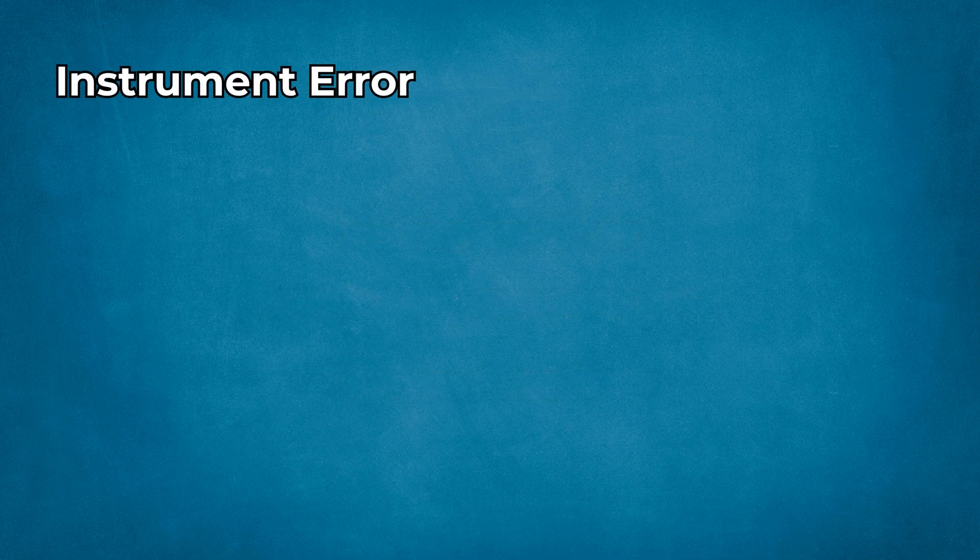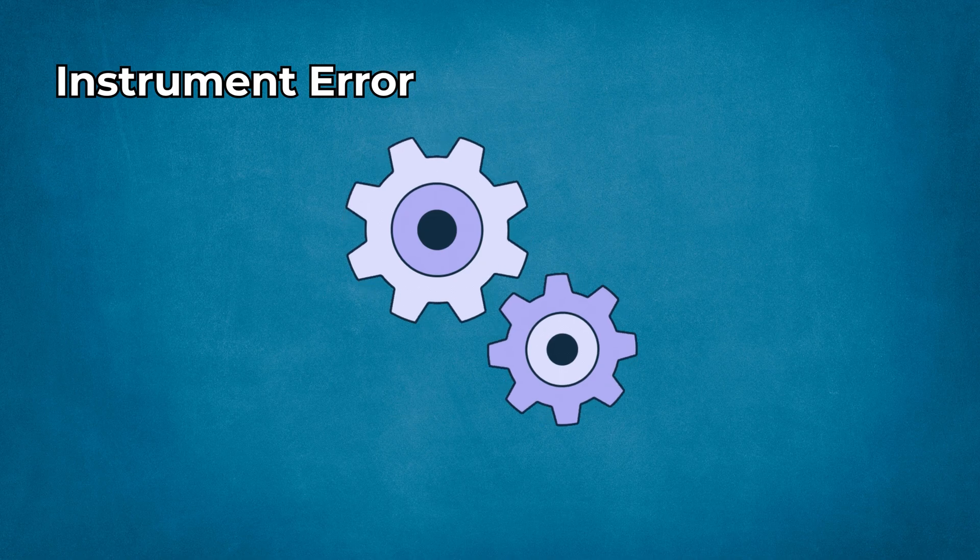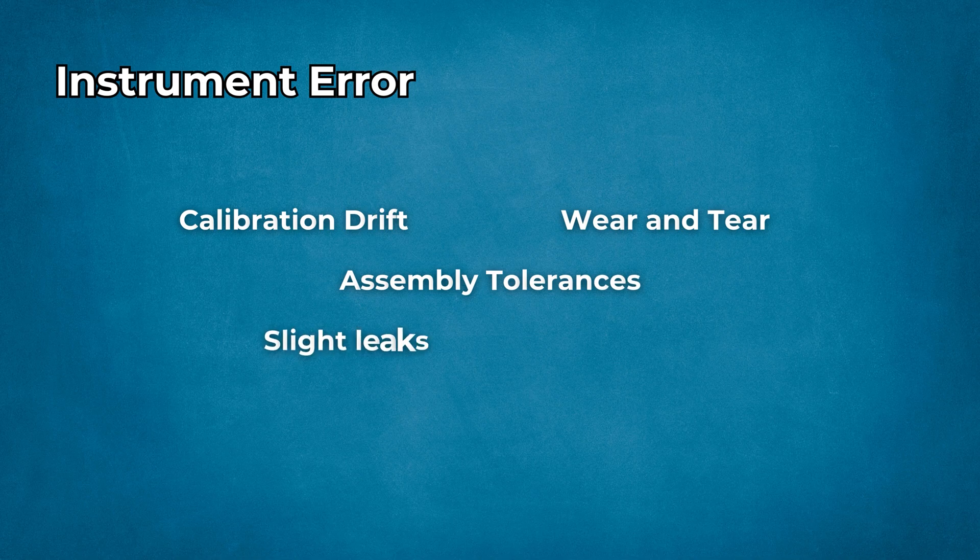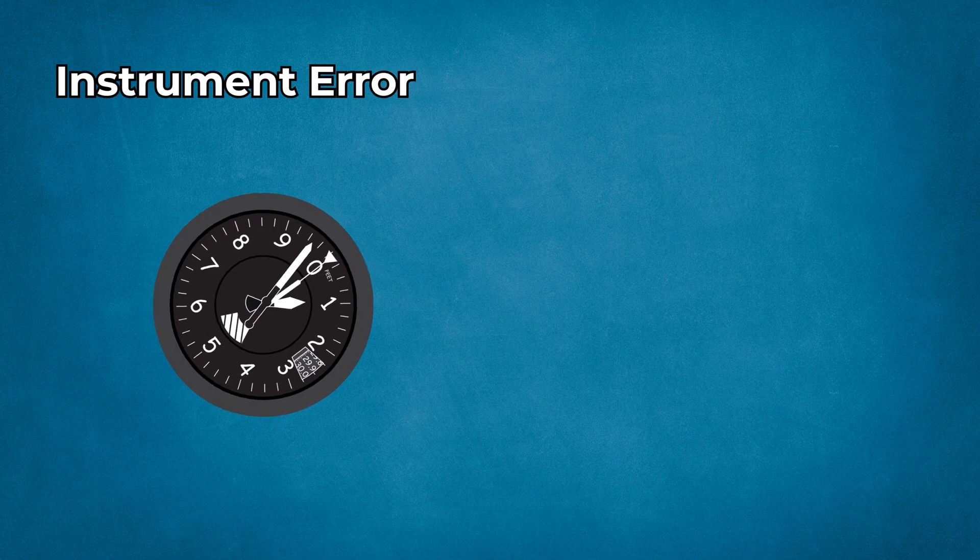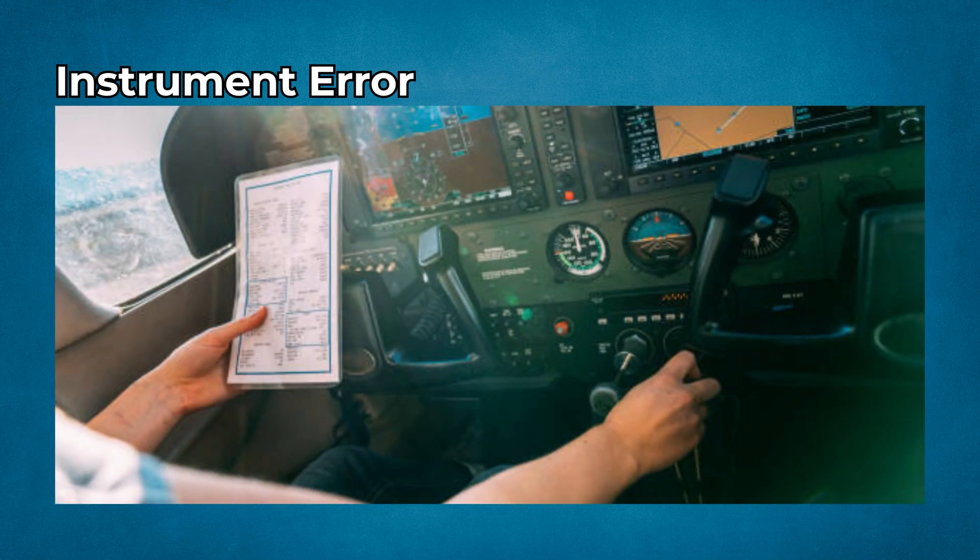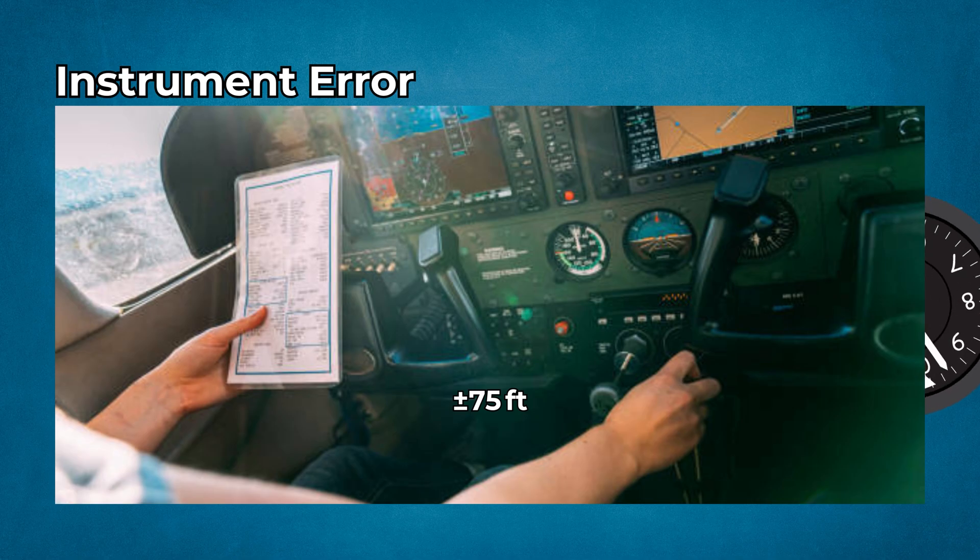One, instrument error. This error stems from mechanical imperfections, calibration drift, wear and tear, assembly tolerances, or slight lags in the static system. Even brand new sensitive altimeters can drift over time. For example, pre-flight checks require your altimeter to read within plus or minus 75 feet of field elevation. If it doesn't, maintenance is needed.